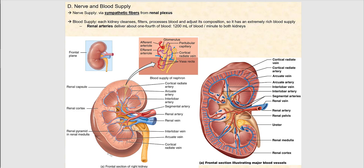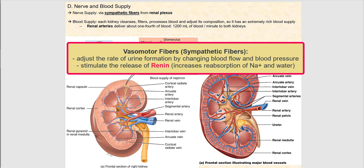The renal plexus is one of the visceral plexuses found in the abdominal pelvic cavity. These vasomotor or sympathetic fibers will adjust the rate of urine formation by regulating blood flow and blood pressure — something we'll look at in the physiology of the kidneys — as well as stimulate the release of renin.